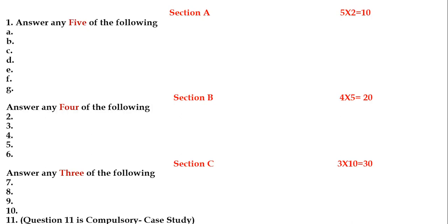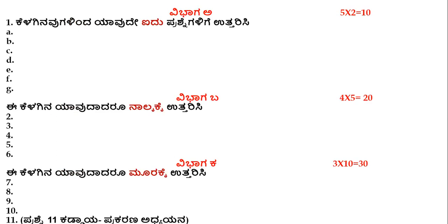Under Section B, they will be asking 5 questions, out of which you have to answer 4 questions, which carry 5 marks each. In Section C, out of 5 questions, you have to opt for any 3, including the 11th question, which is compulsory. Including the 11th, you have to answer another 2 also. Totally, you have to answer 3 questions under Section C, which carry 10 marks each.